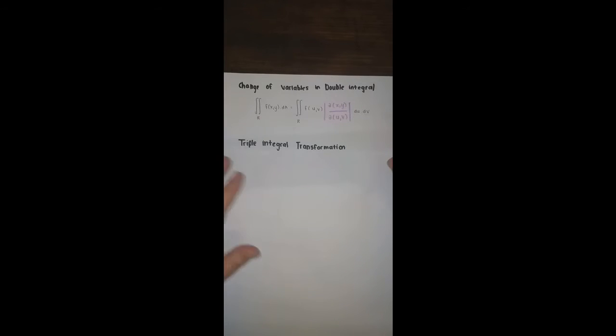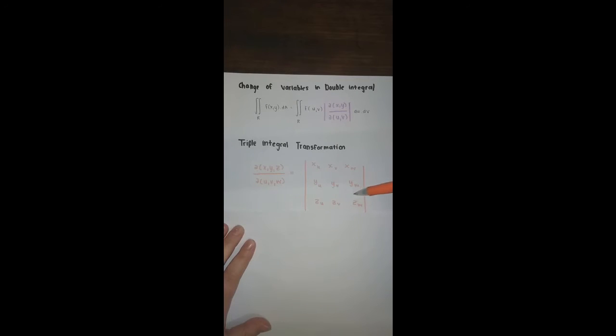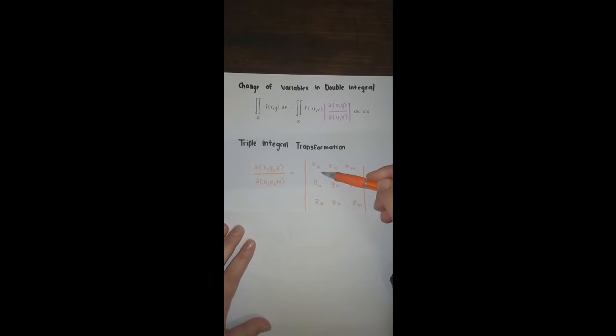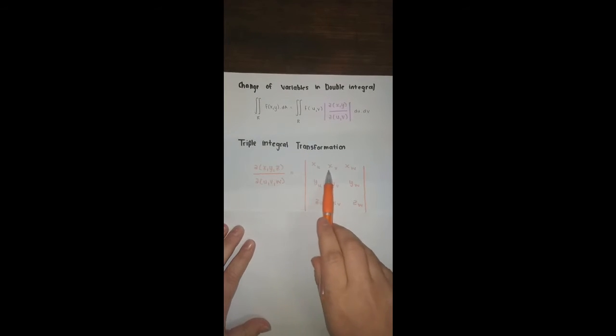For triple integral transformation, you have three variables x, y, and z, each needing three new variables to transform to. You have all partial derivatives of x in the top row, then y, then z. The partial derivative of a variable must be in the same column, and the partial derivatives of x must be in the same row.